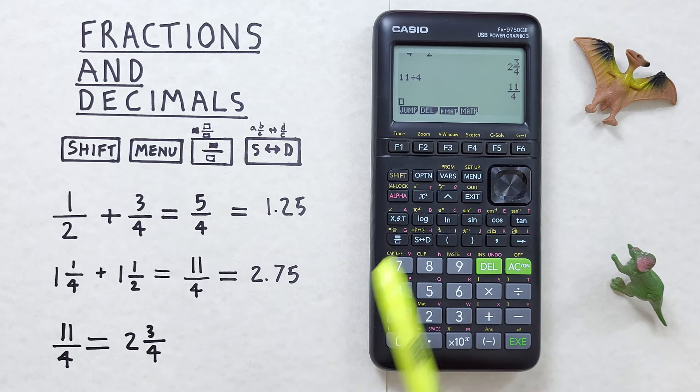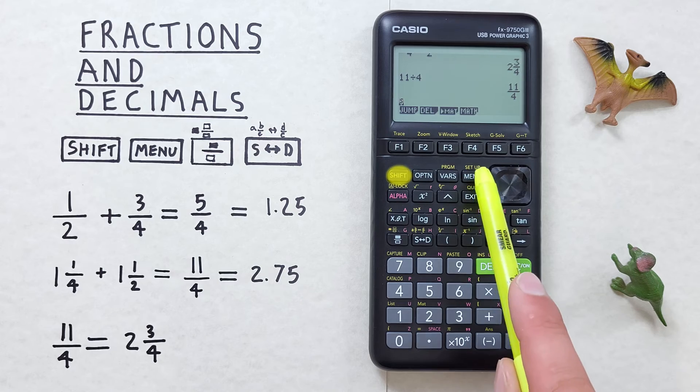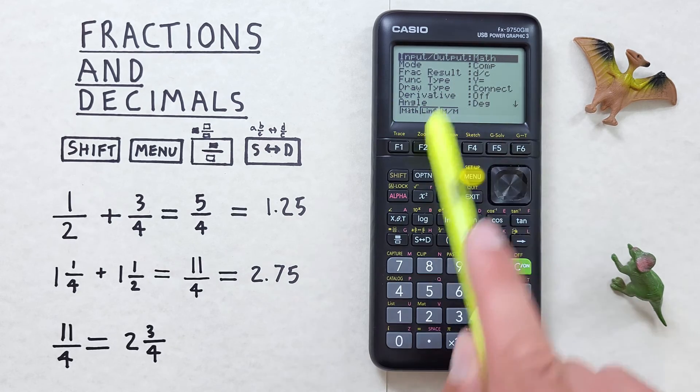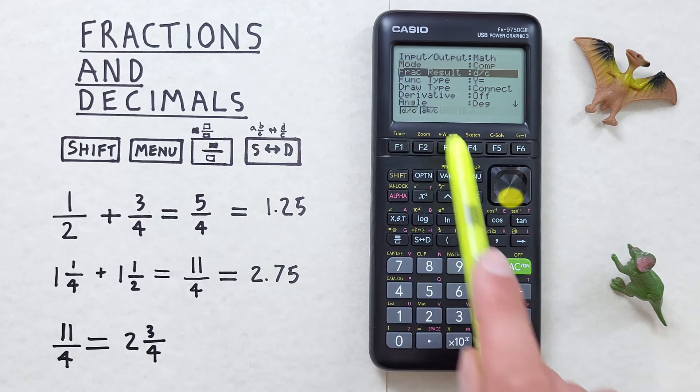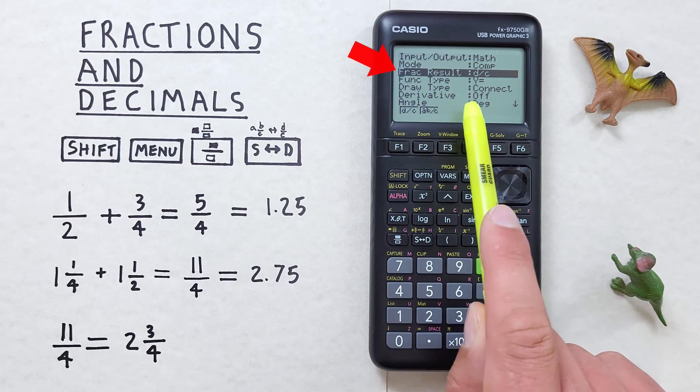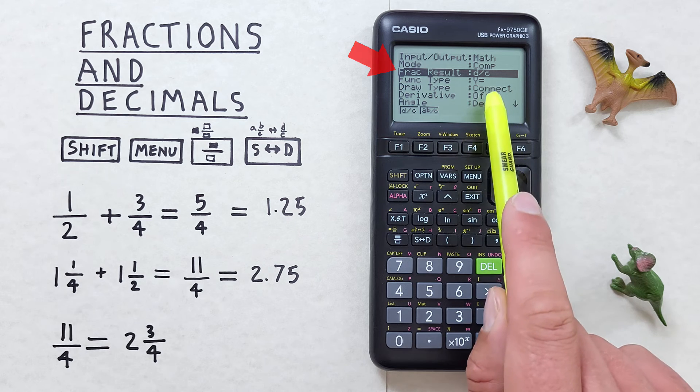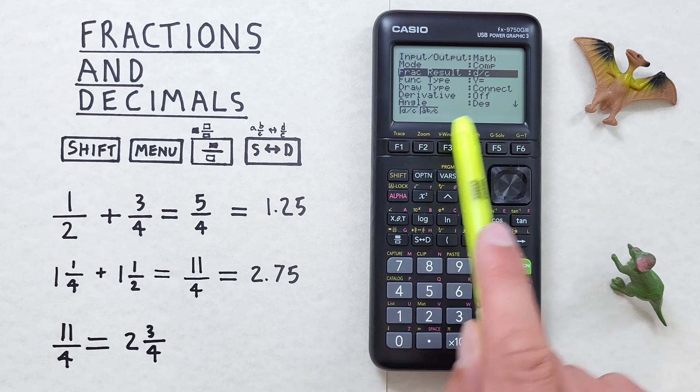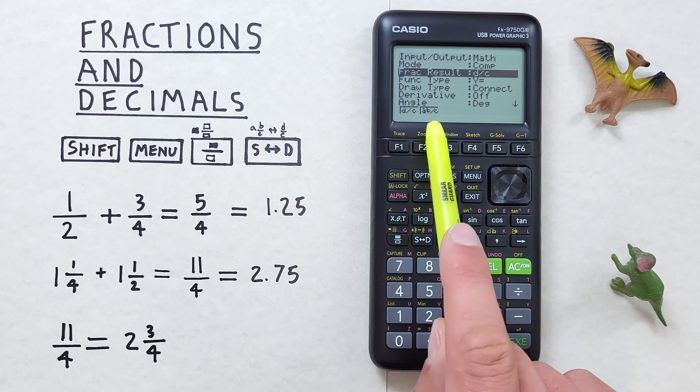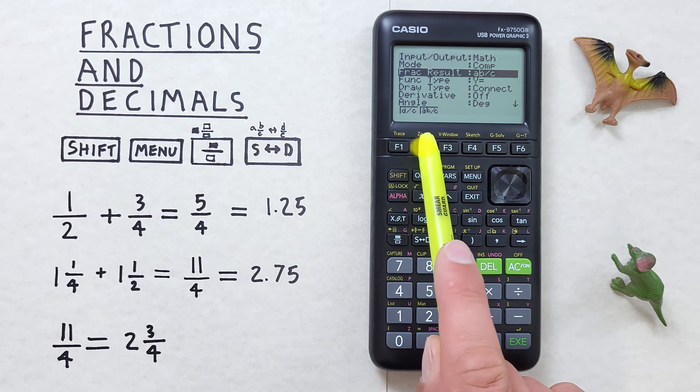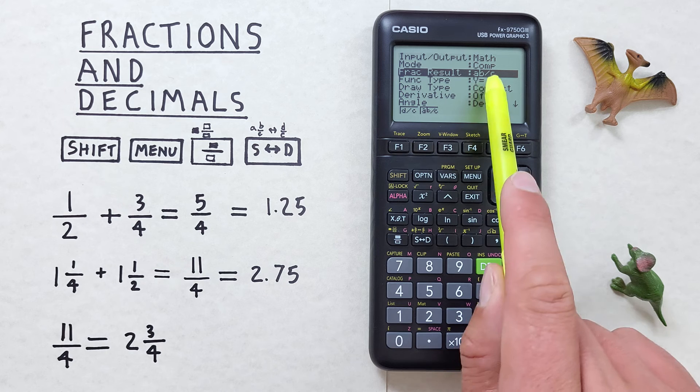To do that we press shift menu which brings us to this menu here. And if we scroll down to the third option here, frack result, you'll see it's set to D over C or improper fractions. We can change that down here. If we press F2 we select the mixed number result. There we go, A B over C.